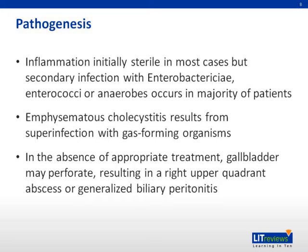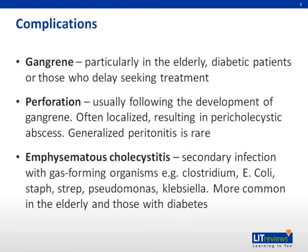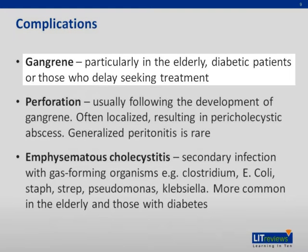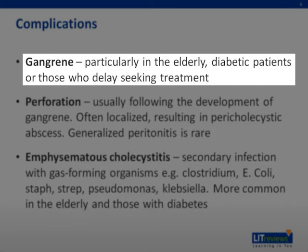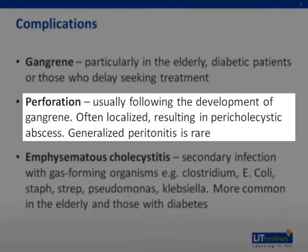Without appropriate treatment, the gallbladder may perforate and result in the development of an abscess in the vicinity of the gallbladder, or less commonly, generalized peritonitis, which constitutes a surgical emergency. The most common complication of acute cholecystitis is the development of gallbladder gangrene, which may occur in up to 20% of cases, resulting in subsequent perforation. Gangrenous cholecystitis occurs particularly in elderly or diabetic patients, and those who seek treatment late. Perforation usually results in a pericholecystic abscess, or less commonly, generalized peritonitis, carrying a high risk of mortality.